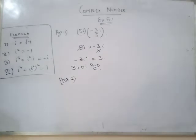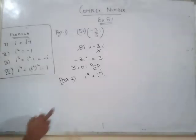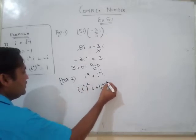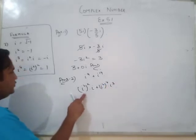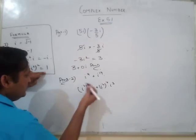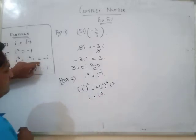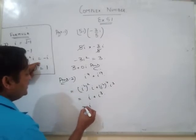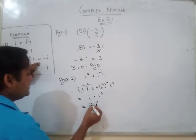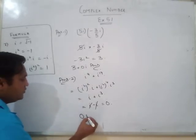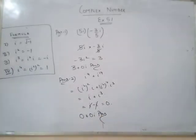Now we move on to answer number 2 of NCERT. In question 2, it is given: iota to the power 9 plus iota to the power 19. Iota to the power 9 can be written as iota to the power 4 whole squared times iota, plus iota to the power 4 to the power 4 times iota cubed. The value of iota to the power 4 is 1, and iota cubed equals minus iota. So combining, we write it in the form of a complex number: 0 plus iota b gives 0 plus iota. This is your answer number 2.